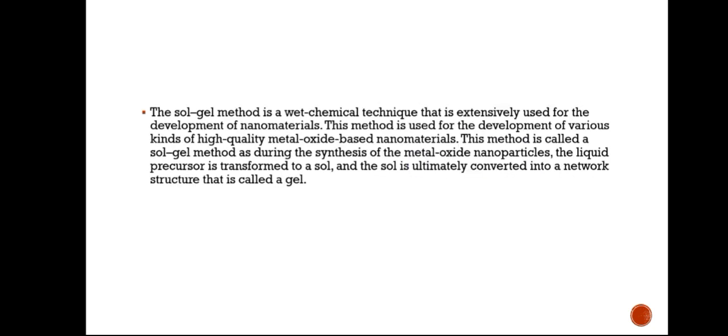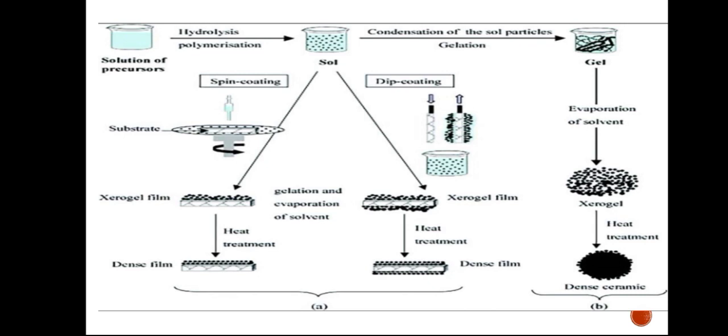Another method is the sol-gel method. The sol-gel method is a wet chemical technique extensively used for the development of nanomaterials, particularly high-quality metal oxide-based nanomaterials. It is called the sol-gel method because during synthesis, the liquid precursor is first transferred to a sol, and the sol is ultimately converted into a network structure called a gel.